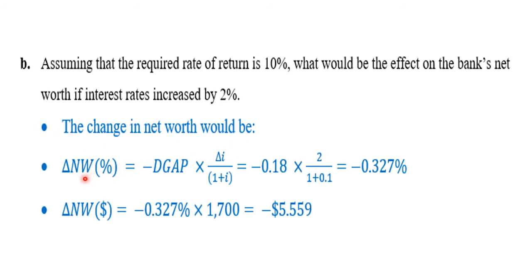The variation in net worth equals minus the duration gap times the variation in interest over 1 plus the initial interest. So: minus 0.18 times the variation in interest — which is new minus old, 12% minus 10%, or simply plus 2% since rates increased by 2% (use minus 2% if decreasing) — divided by 1 plus 0.1.